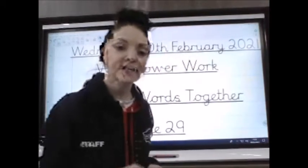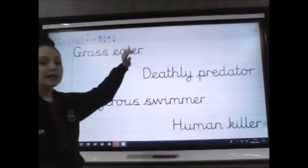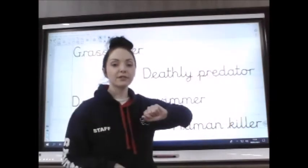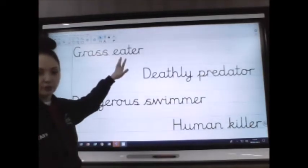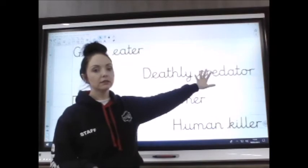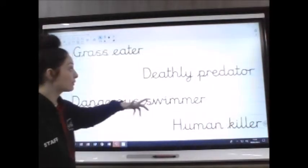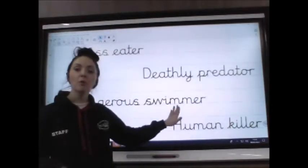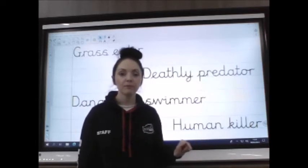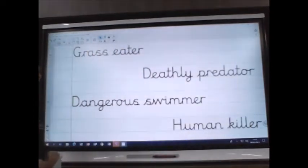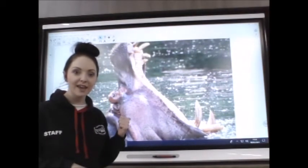I've done one and I want you to guess what my dangerous animal is. My dangerous animal is a grass eater, a deathly predator, a dangerous swimmer, and a human killer. So it eats grass — it's a herbivore, or actually an omnivore, because if it eats grass and eats humans it eats both herbs and meat. It's an animal in the water, it swims, and they kill lots of humans — more than I thought when I looked it up. What do you think my animal might be?